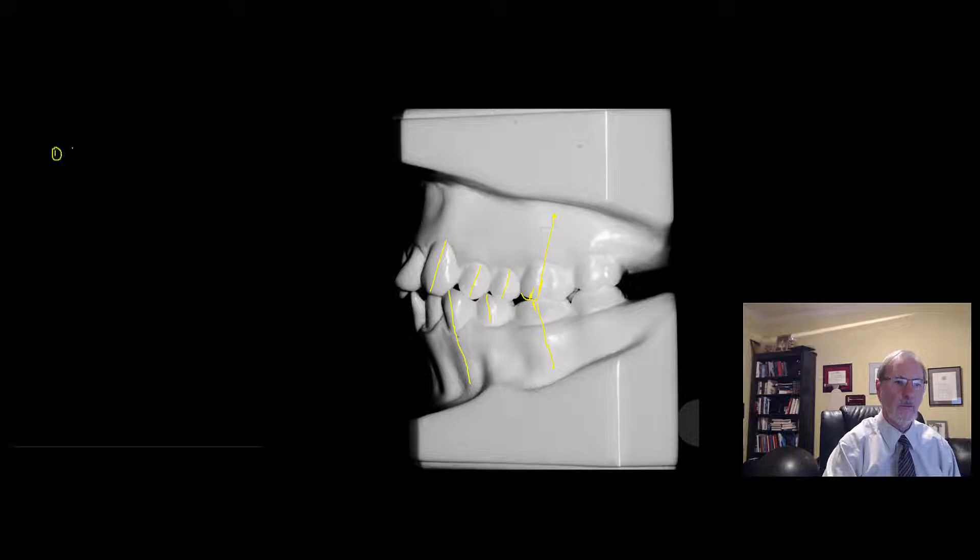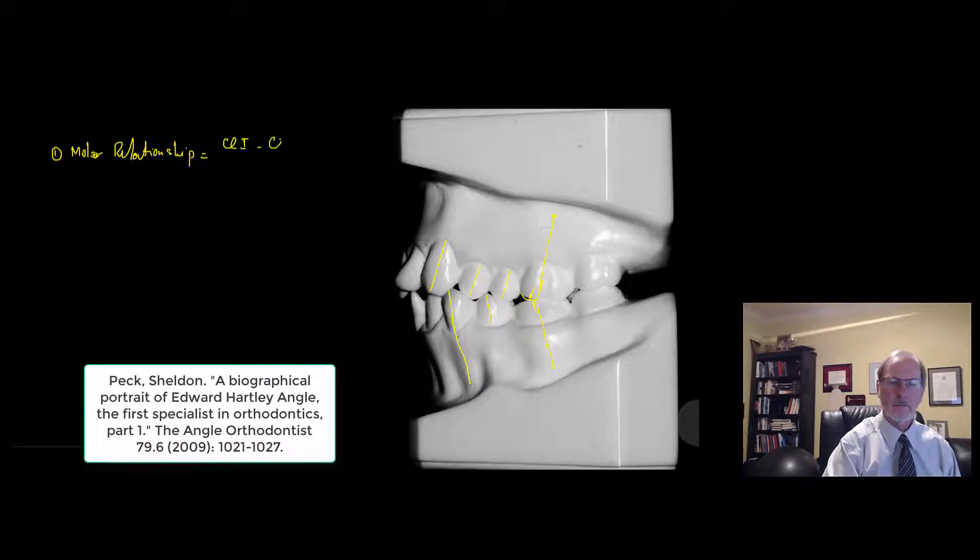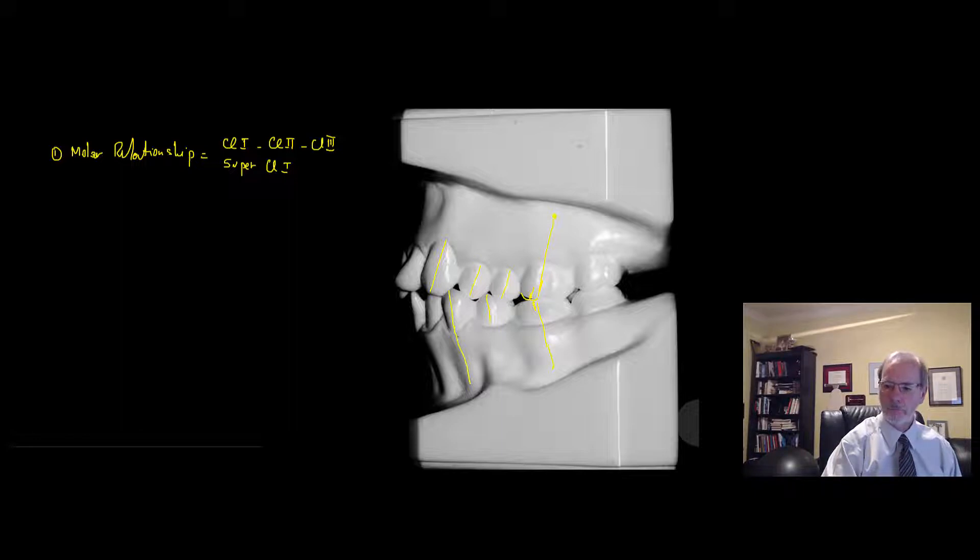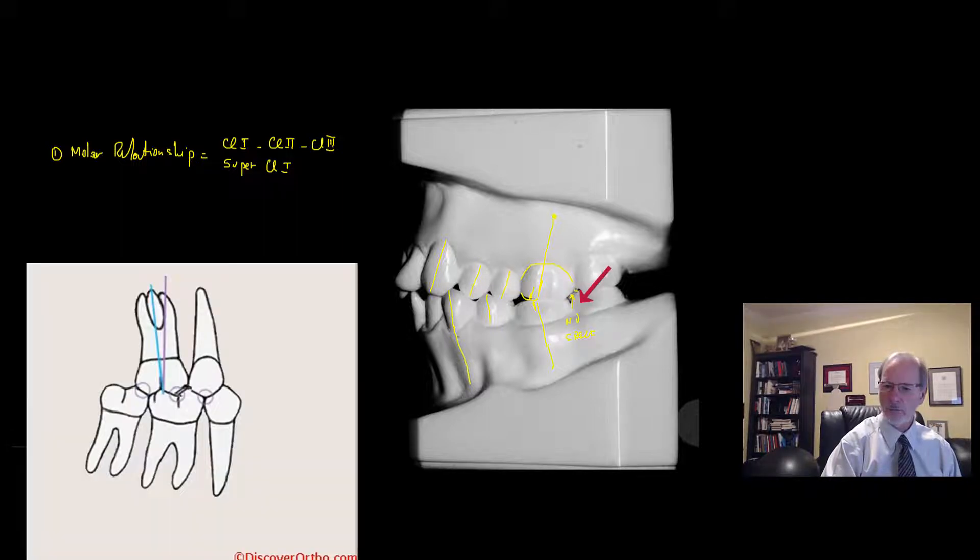We're going to be looking at the molar relationship. By Angle standards, it could be class one, class two, or class three. Remember also that we have the super class one concept of Andrews that requires the apex of the upper first molar to be slightly distal in relation to the axis of the upper molar crown. It seats the occlusion and normally you should have no space here because the distal marginal ridge of the upper first molar should be in contact with the lower second molar.